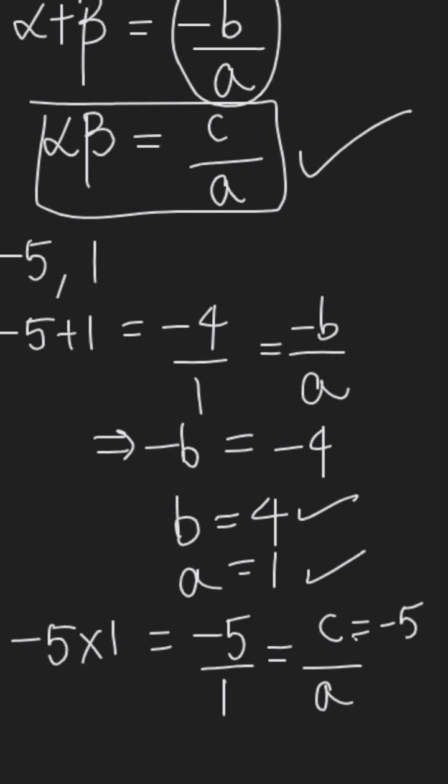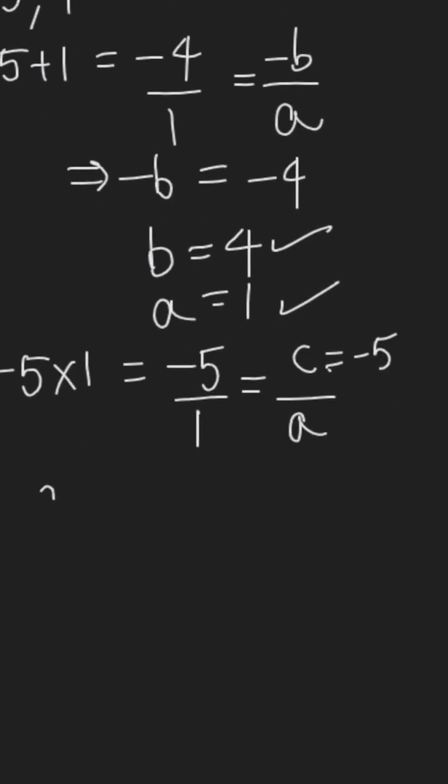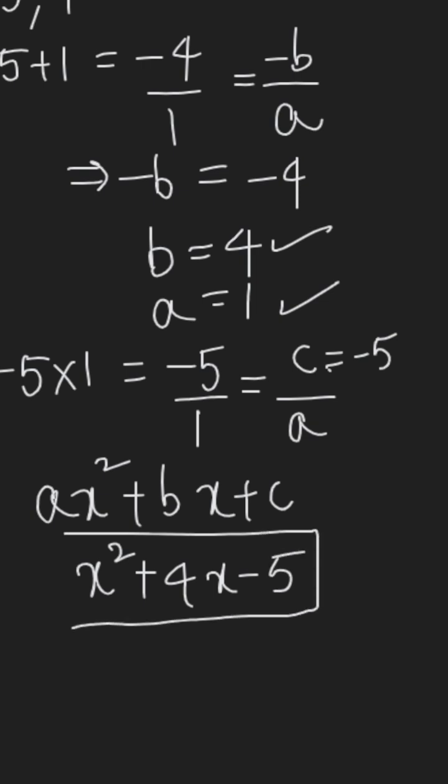So using this, we can form the polynomial as ax square plus bx plus c. Here a equal to 1, so it will be x square, and b equal to 4, so it will be 4x, and the constant term is negative 5. So this is the required polynomial.